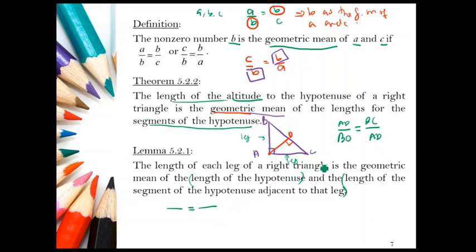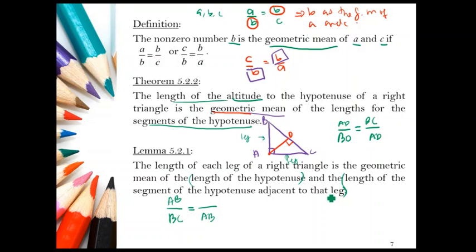Taking leg AB as the geometric mean, AB must be in the form of a proportion — equality of two ratios. AB is the geometric mean of the hypotenuse BC and the segment of the hypotenuse adjacent to AB, which is BD. So the proportion is: BC over AB equals AB over BD, meaning AB is the geometric mean of BC and BD.